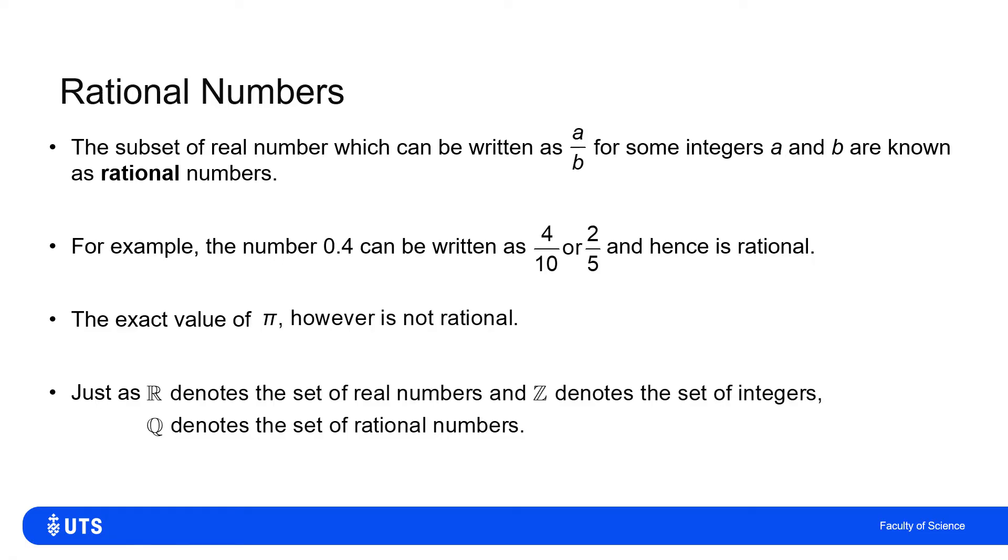So, revising what we saw previously, that this uppercase R is the set of all real numbers, and Z is the set of all integers, Q is the set of all rational numbers. And I think a fairly easy definition, if a number is not rational, then it is irrational.